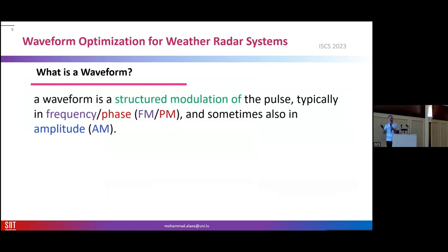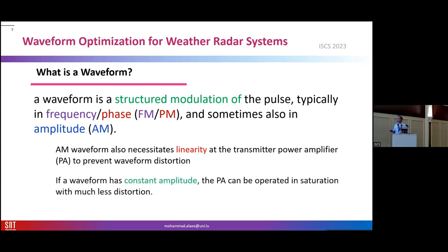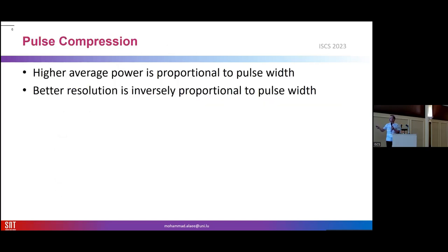What is a waveform in general? We have two different kinds of signal: continuous wave and pulse wave. The waveform definition refers to the modulation used inside the pulse — that can be in the frequency, phase, or amplitude. But typically in radar, amplitude modulation cannot be used because it causes nonlinearity and distortions for the power amplifier. Power amplifiers typically work in saturation, so we are limited to phase modulation and frequency modulation.